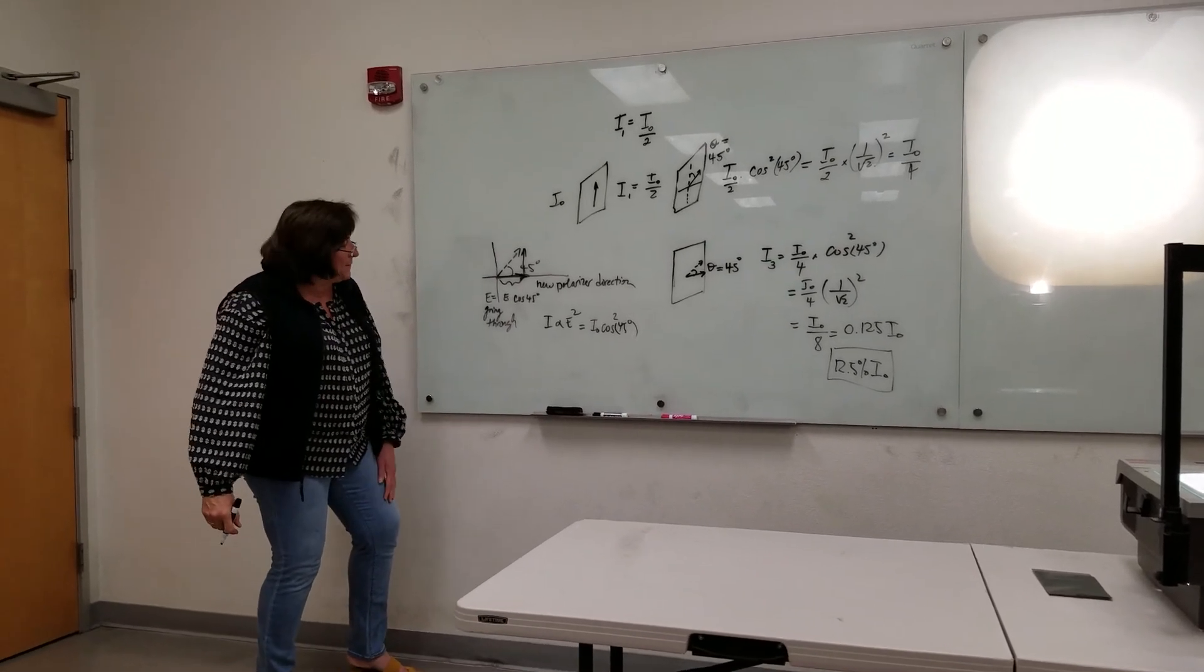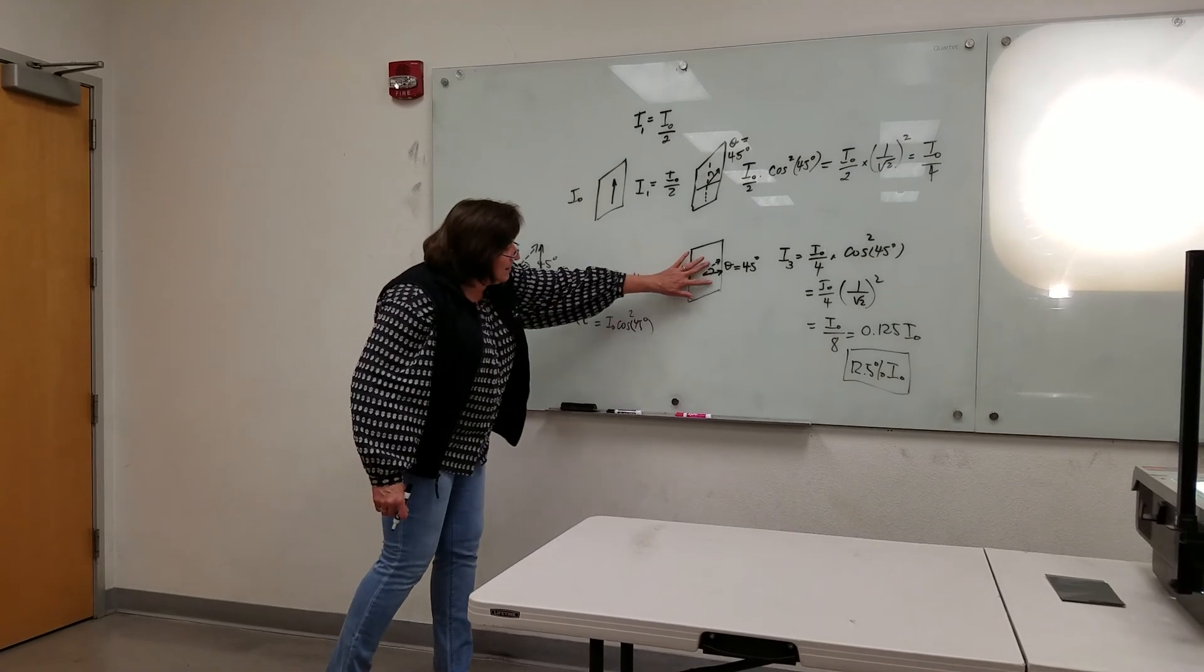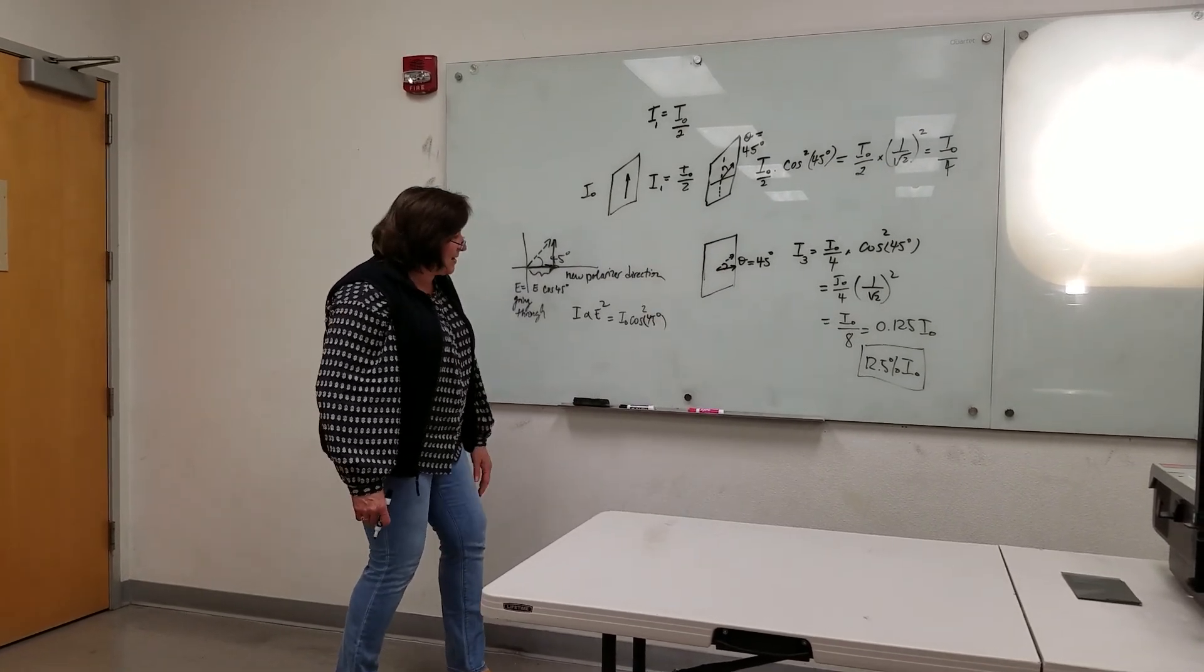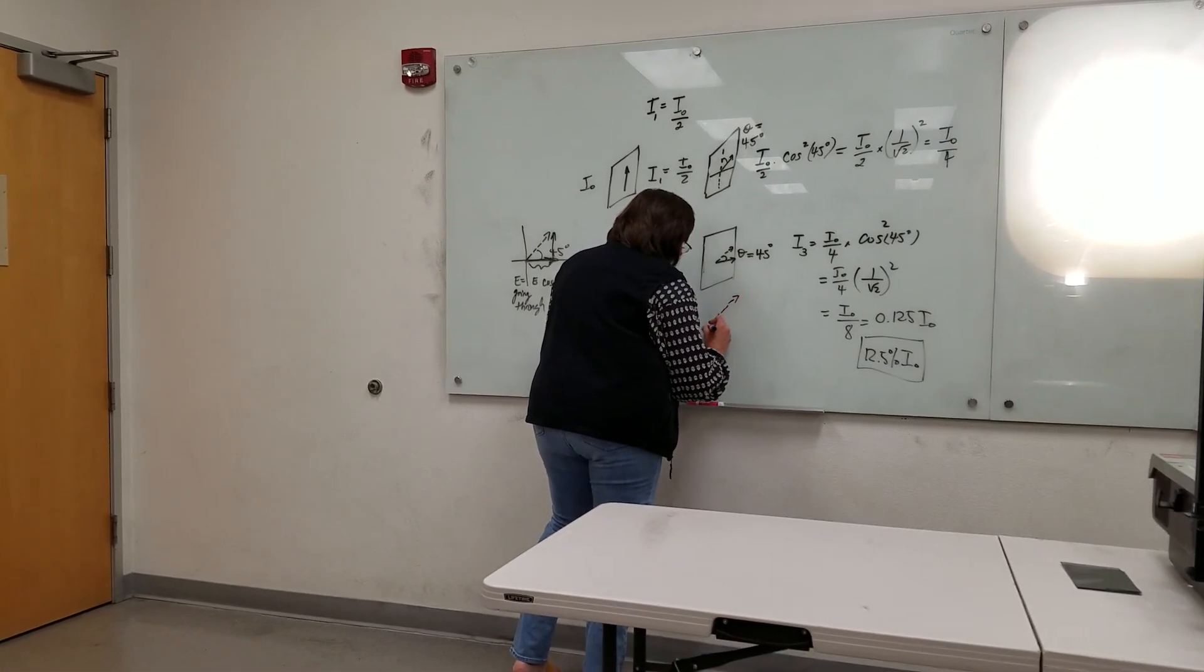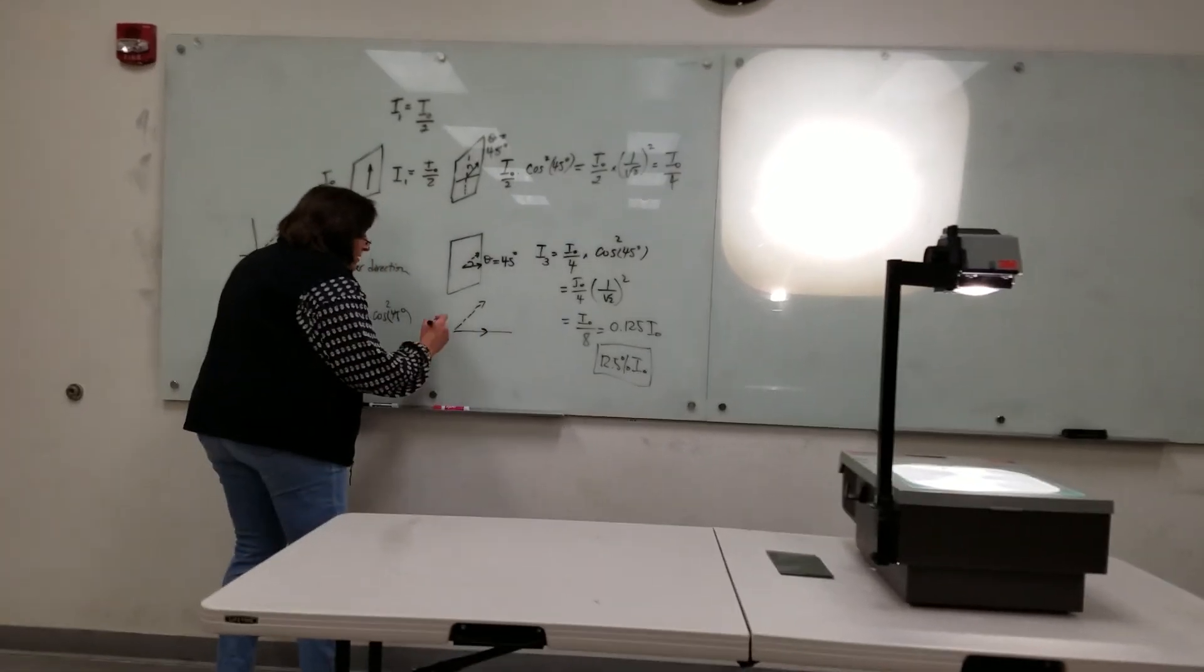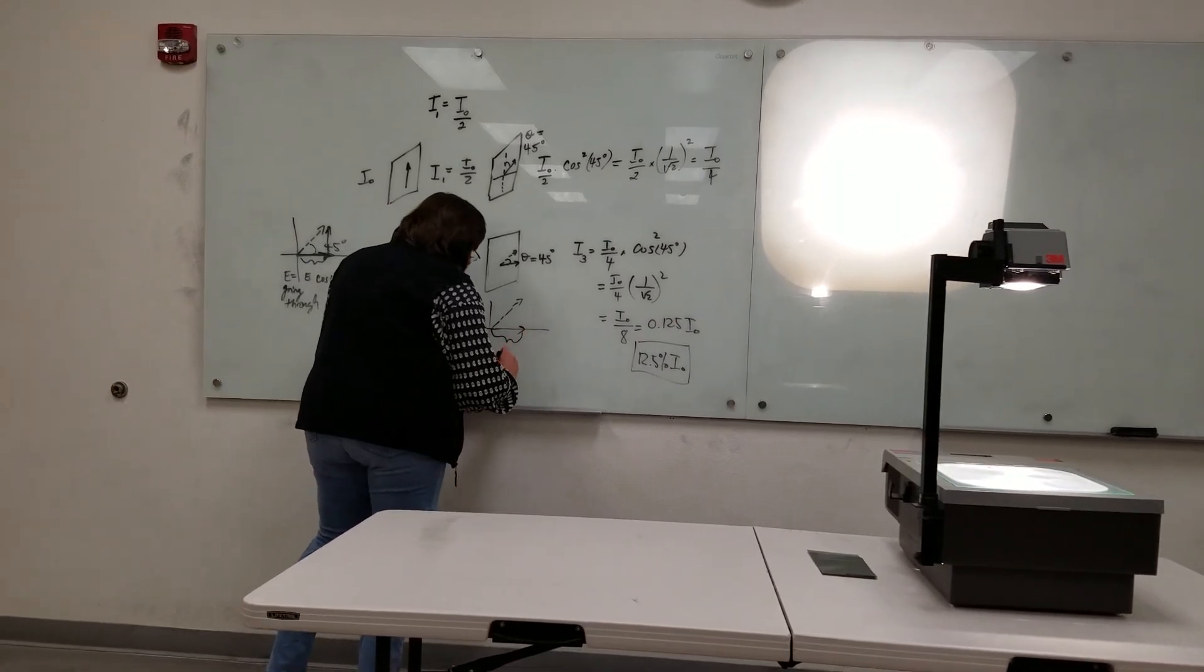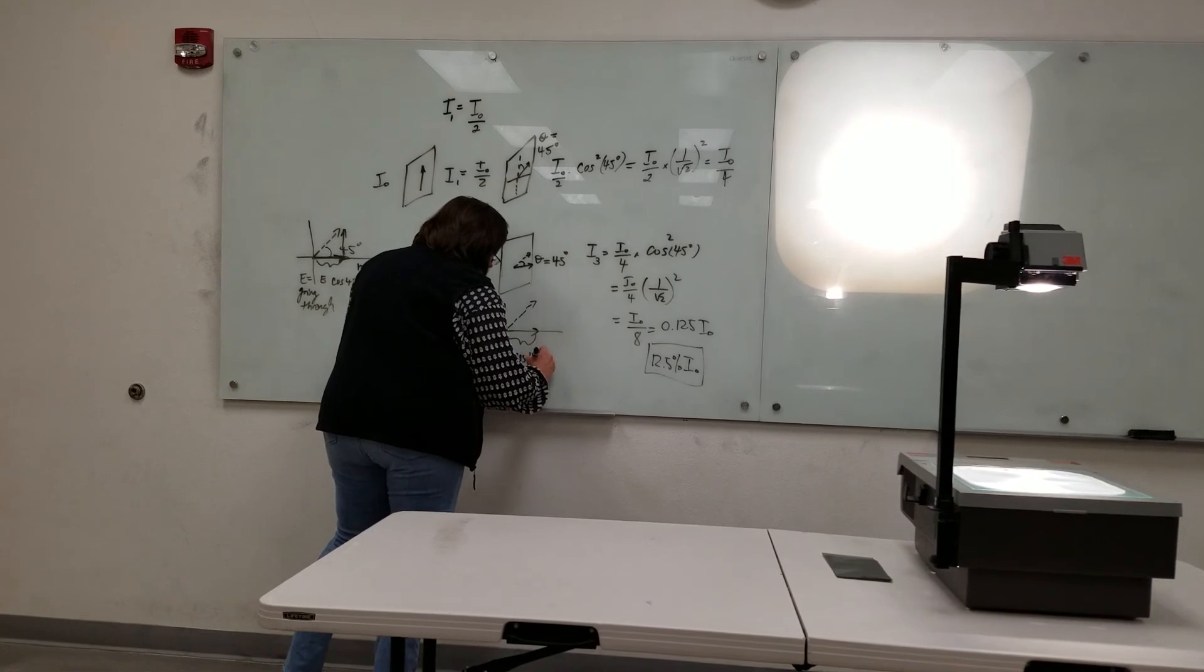But then again, we do the same thing. Here, we've already got our diagram in the right direction to analyze the components. So once again, what's coming in is polarized in this direction. What we need to figure out is how much is polarized in that direction. We do our X, Y, and Z axis, and the size of that is related to the cosine of 45 degrees.